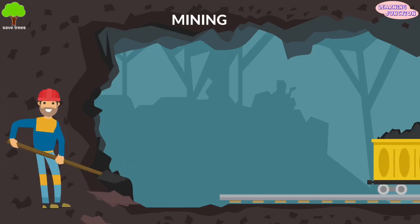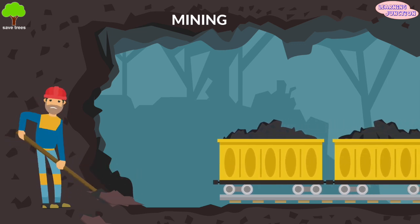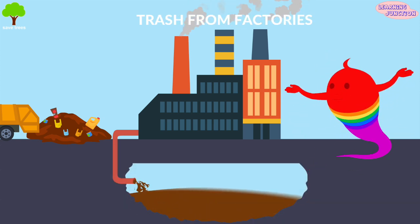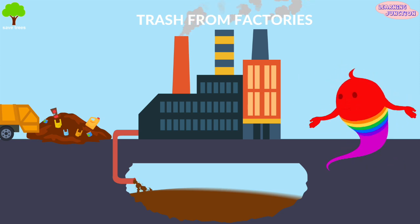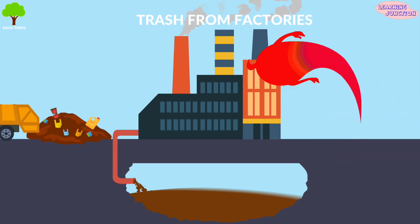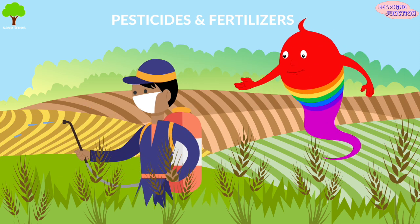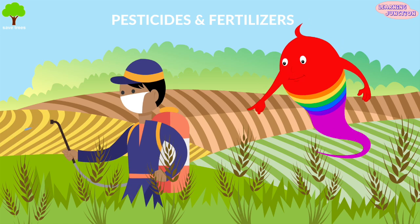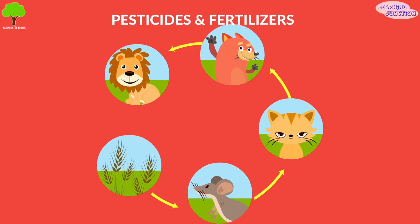Mining weakens the surface of the soil, producing large holes in the ground and causing erosion. Throwing harmful trash from factories on land damages the soil and causes pollution. Overuse of pesticides and fertilizers: plants absorb the pesticides and fertilizers through the soil and they can enter the food chain, thus leading to soil pollution.